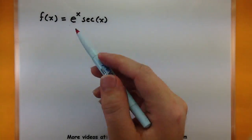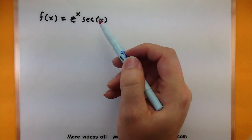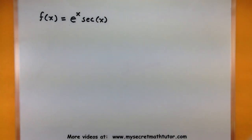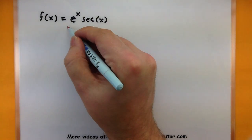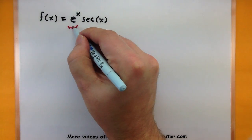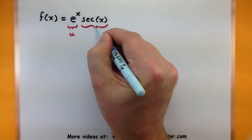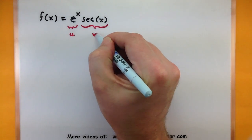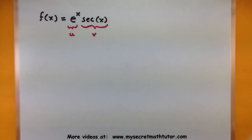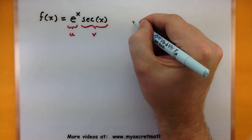Let's try another example using our product rule and these new trigonometric rules. In this one I have e to the x multiplied by secant of x. So I really have two functions being multiplied together here, and I need to find their derivative using our product rule.